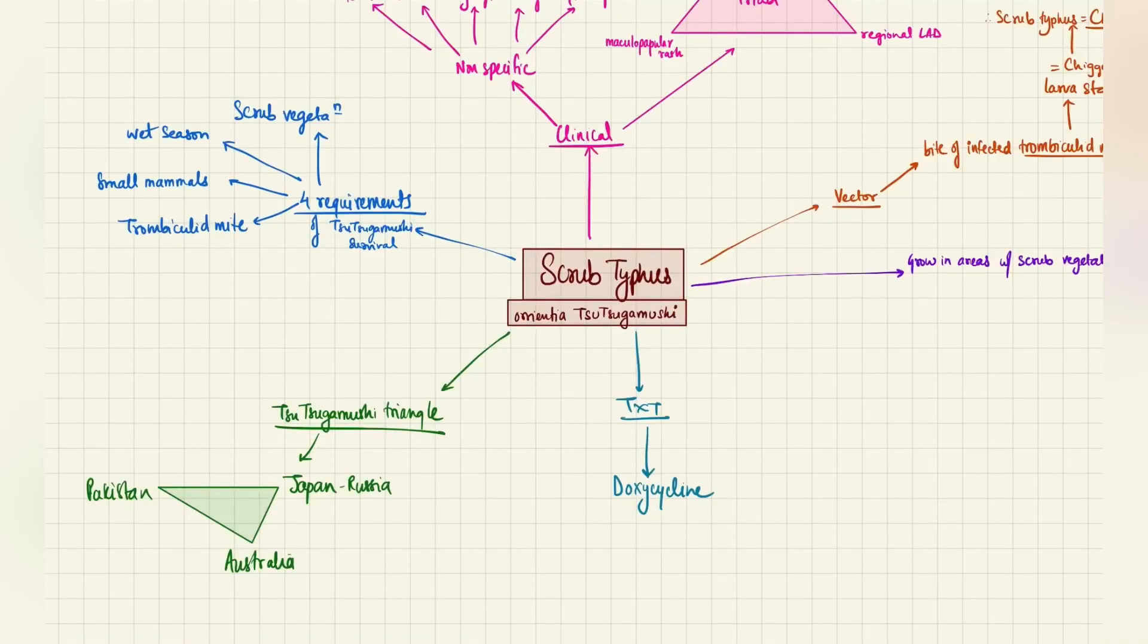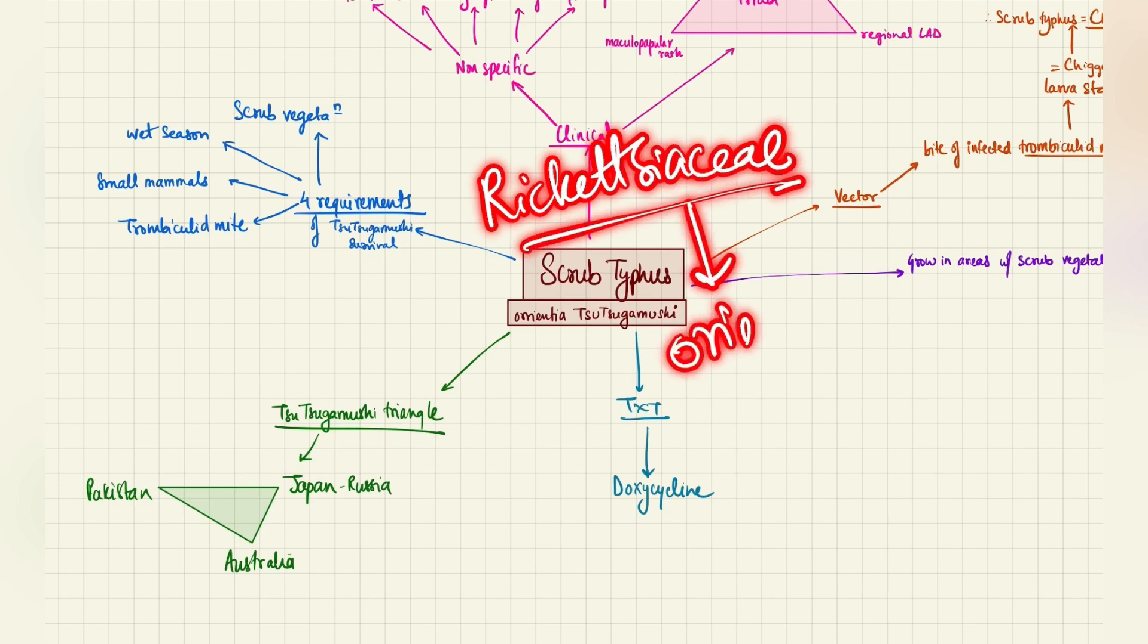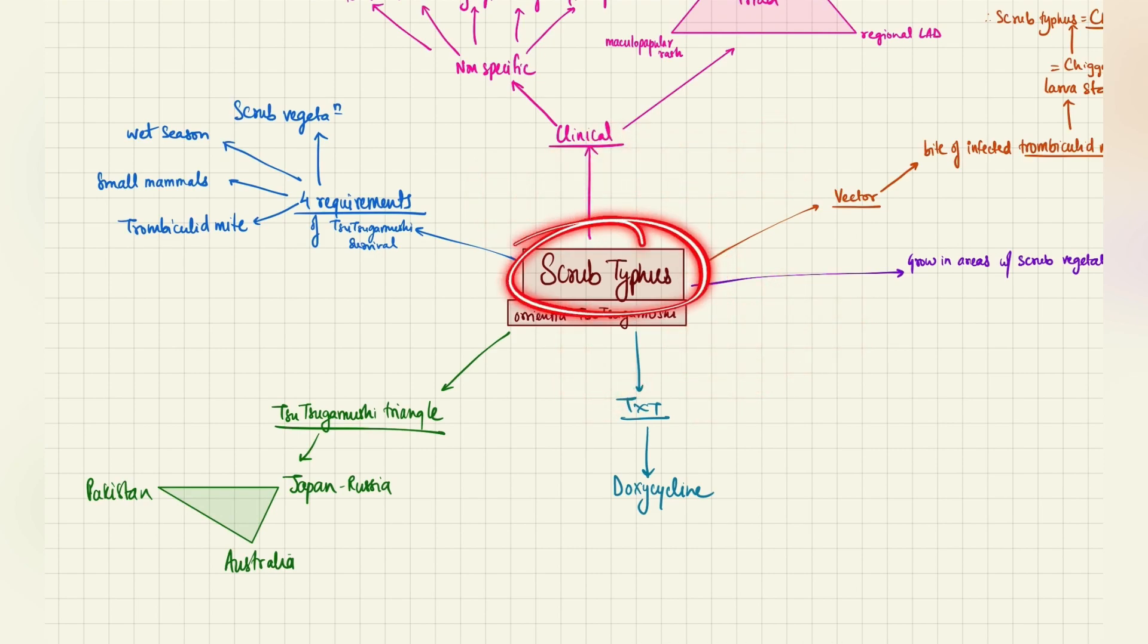Hello everyone, this is Vabhav Shandilya, MBBS student from ESIC Government Medical College Hyderabad. Today we will continue our discussion on the Rickettsia family, and today we have the next member which is Orientia Tsutsugamushi, also known as Scrub Typhus.